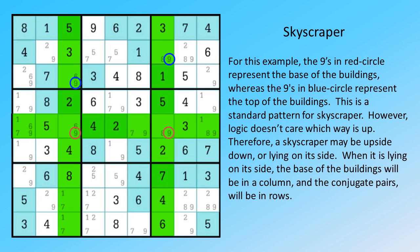However, logic doesn't care which way is up. Therefore, a skyscraper may be upside down, or lying on its side. When it is lying on its side, the base of the buildings will be in a column, and the conjugate pairs will be in rows.